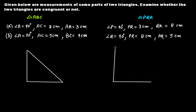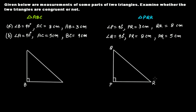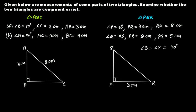We don't need an accurate diagram, just a rough one. In the first triangle, B is 90 degrees, and in the second, P is 90 degrees. So angle B equals angle P equals 90 degrees. We have AC as 8 cm, AB as 3 cm, PR as 3 cm, and QR as 8 cm.